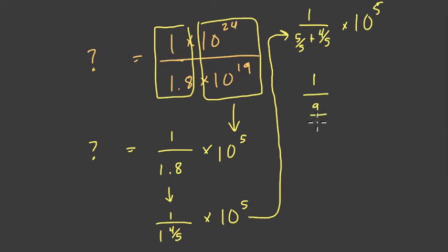So we have 1 divided by 9 fifths times 10 to the 5th. What do we do next? Well, when we're dividing by a fraction we can multiply by its reciprocal. So this is really 1 times 5 ninths. I just multiply instead of dividing and I flip that fraction to its reciprocal - instead of 9 over 5, it's 5 over 9. And now we're getting somewhere. So what's this? 1 times 5 ninths is 5 ninths.